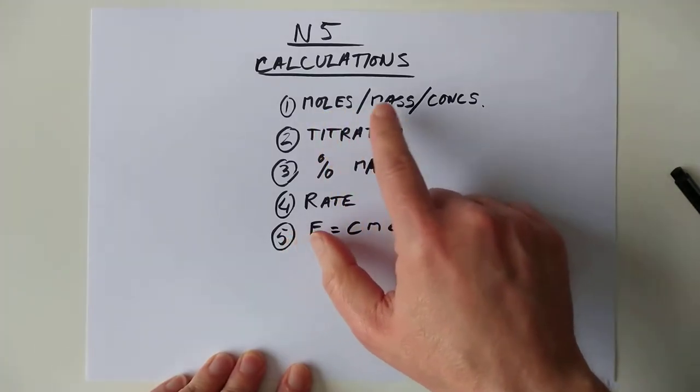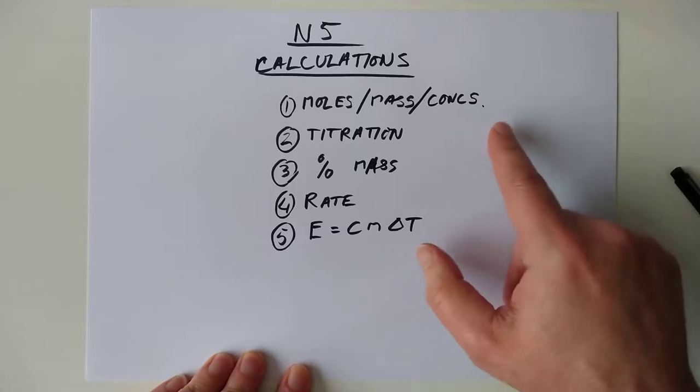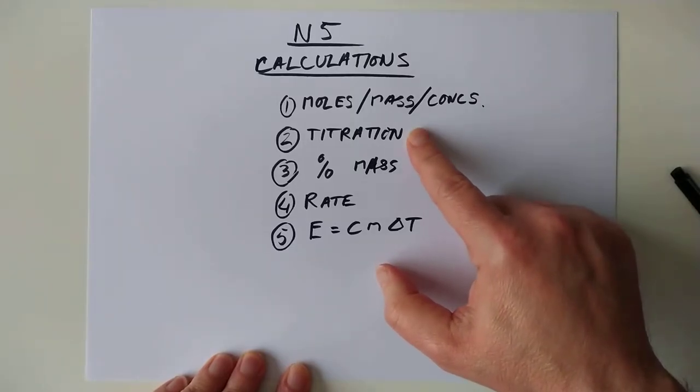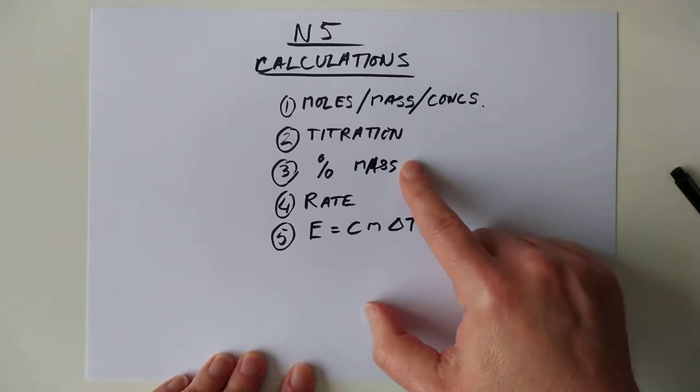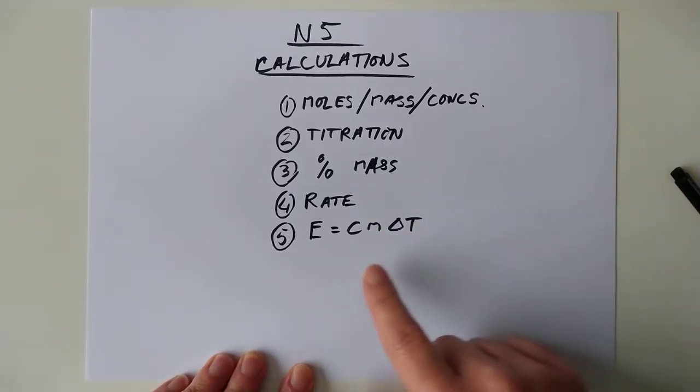There's ones involving moles and mass and concentration, sometimes a combination of all three. There's titration calculations, which at first look scary, but once you get the hang of them, they're actually a relative gift. Percentage mass, also a gift. Rate are straightforward. The only sneaky part in rate are the units. And lastly, energy calculations involving CMΔT, usually where we burn a fuel and heat some water up.